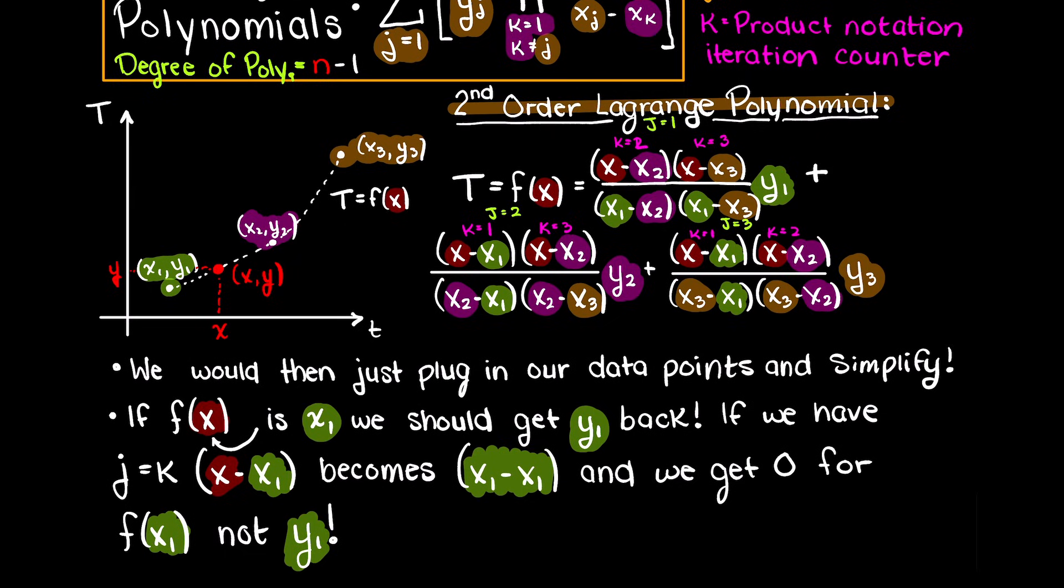Now the cool thing with Lagrange polynomials is that up until this part of our problem will be the same if you are interpolating for any problem with 3 data points. Then you would just go ahead and plug in your discrete data points for all the variables and simplify the function.